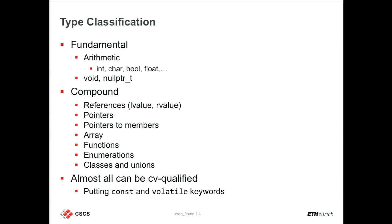Almost all of these types can be qualified as const or volatile. Const means the value cannot be changed. Volatile means this can be changed by anyone, at any time — even from something not running in my code, maybe a sensor out there.